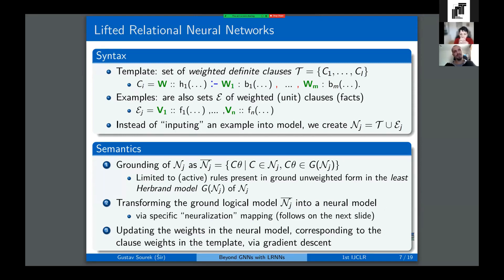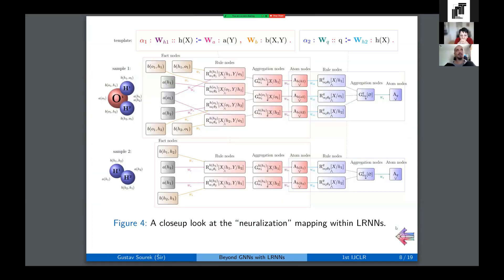The semantics of that process is as follows. We calculate the least Herbrand model of the logical sample to obtain all the valid groundings of all the rules in the template. And then we map this ground logical model into a neural model by specific mapping that I'll introduce shortly. And then once we have this neural model, we can just use gradient descent to optimize the parameters originally associated with rules in standard fashion.